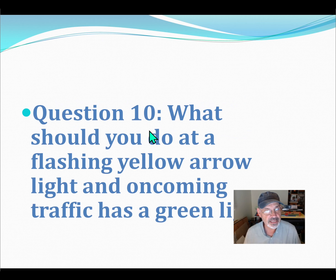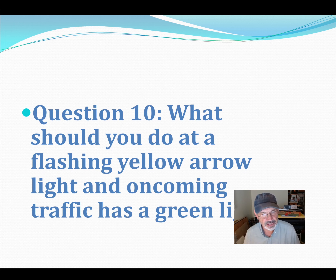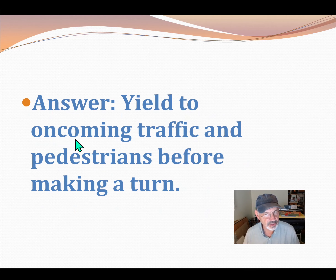Question 10: What should you do at a flashing yellow arrow light when oncoming traffic has a green light? Answer: Yield to oncoming traffic and pedestrians before making a turn. That's it for this video — there are a lot more questions. Enjoy, good luck, pass that test. Read — see if you can read that handbook.